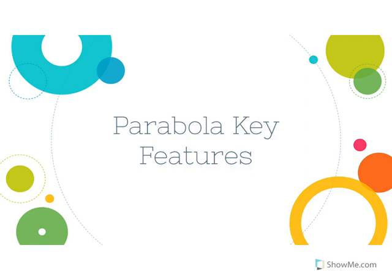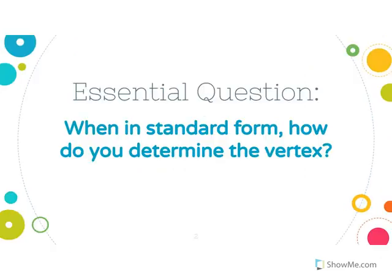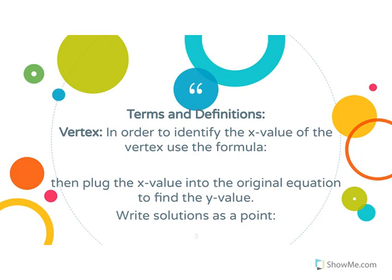This set of notes is on parabola key features. The essential question is: when in standard form, how do you determine the vertex? The first term we're going over is the vertex. To identify the x-value of the vertex, you use the formula negative b over 2a. That x-value is also called the axis of symmetry.